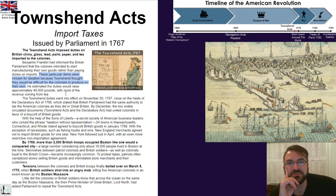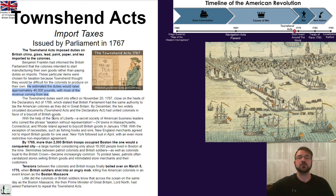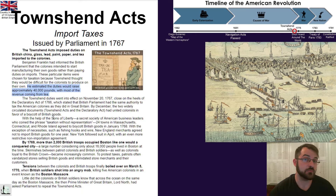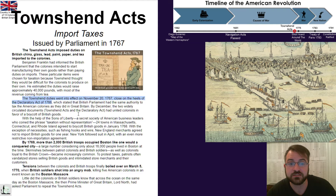How about we just put taxes on stuff that we know you can't make? That's the whole idea of it. He estimated that the duties would raise approximately 40,000 pounds, with most of the revenue coming from tea — tea was the really big money maker. The Townshend duties went into effect on November 20th, 1767, close on the heels — right behind — the Declaratory Act of 1766.